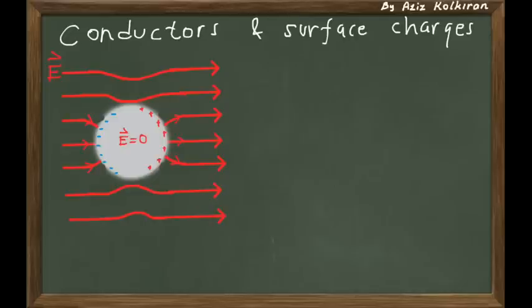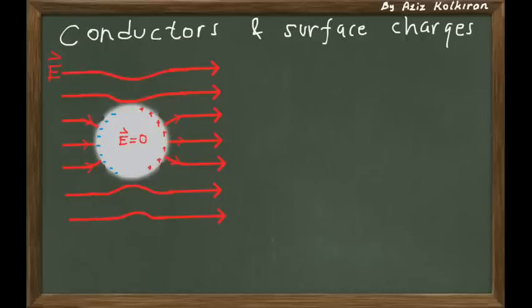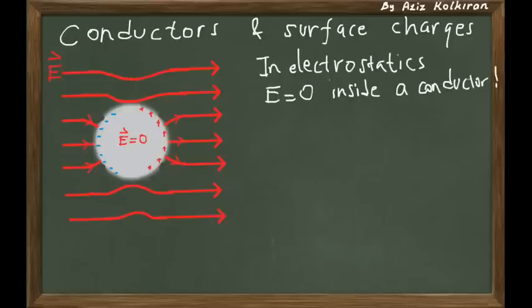The electric field inside is equal to zero. Even though outside the electric field is non-zero, whenever you put a conductor inside an electric field, the electric field inside the conductor is always zero — whether it is charged or not, whether it is in an electric field or not. The electric field inside a metal is always zero. There is no exception.